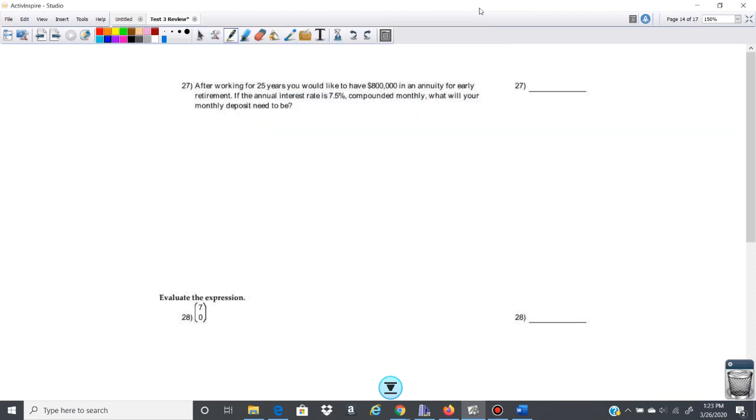Our next problem says after working for 25 years you would like to have $800,000 in an annuity for early retirement. If the annual interest rate is 7.5% compounded monthly, what will your deposit need to be?